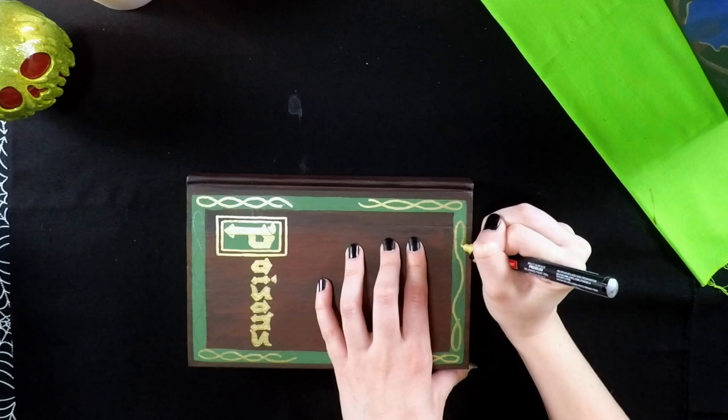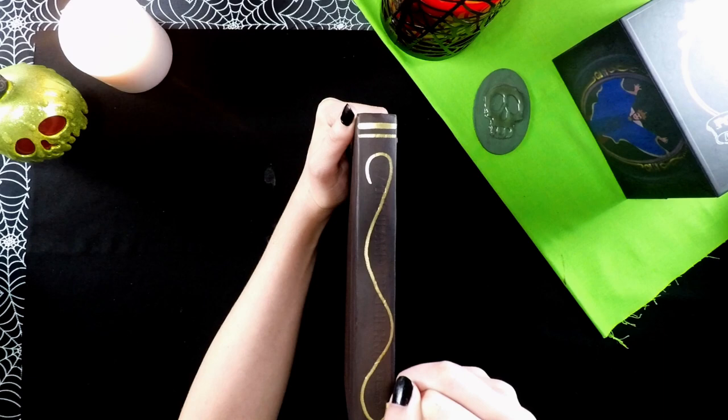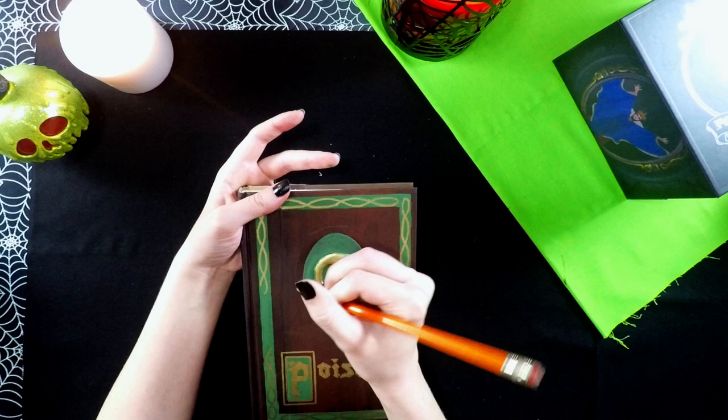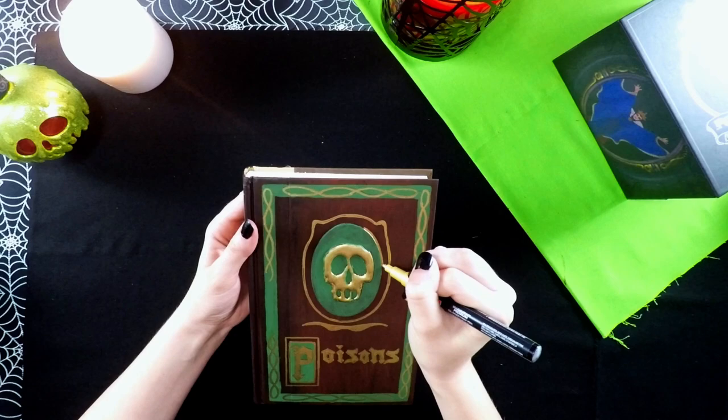Next, I add a few simple embellishments to the border of the book. I start with pencil and then again outline with the gold metallic marker. Before finishing the last embellishments, I glued the skull on top of the front cover of the book. And this was the final result of our second spell book.